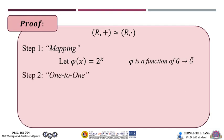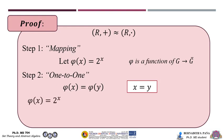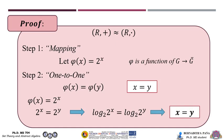For the second step, we show that it is one-to-one. We assume that φ(x) = φ(y) and show that x = y. Since φ(x) = 2^x, we have 2^x = 2^y. Taking log base 2 of both sides, log₂(2^x) = log₂(2^y), thus x = y.